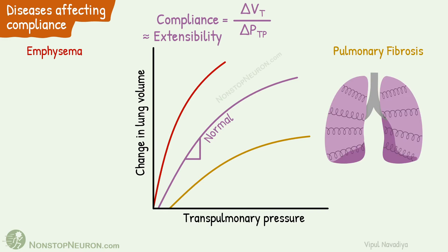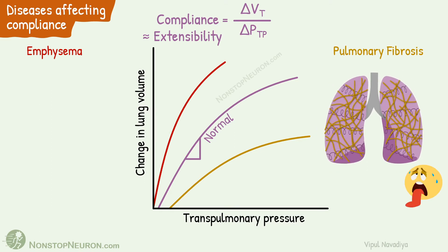Let's talk about pulmonary fibrosis first. In pulmonary fibrosis, fibrous tissues get deposited in the lungs, so lungs become stiff and it's difficult to inflate them. The compliance diagram recorded for such patients falls here — the same increase in transpulmonary pressure produces less increase in lung volume in such patients. Thus, compliance is decreased.